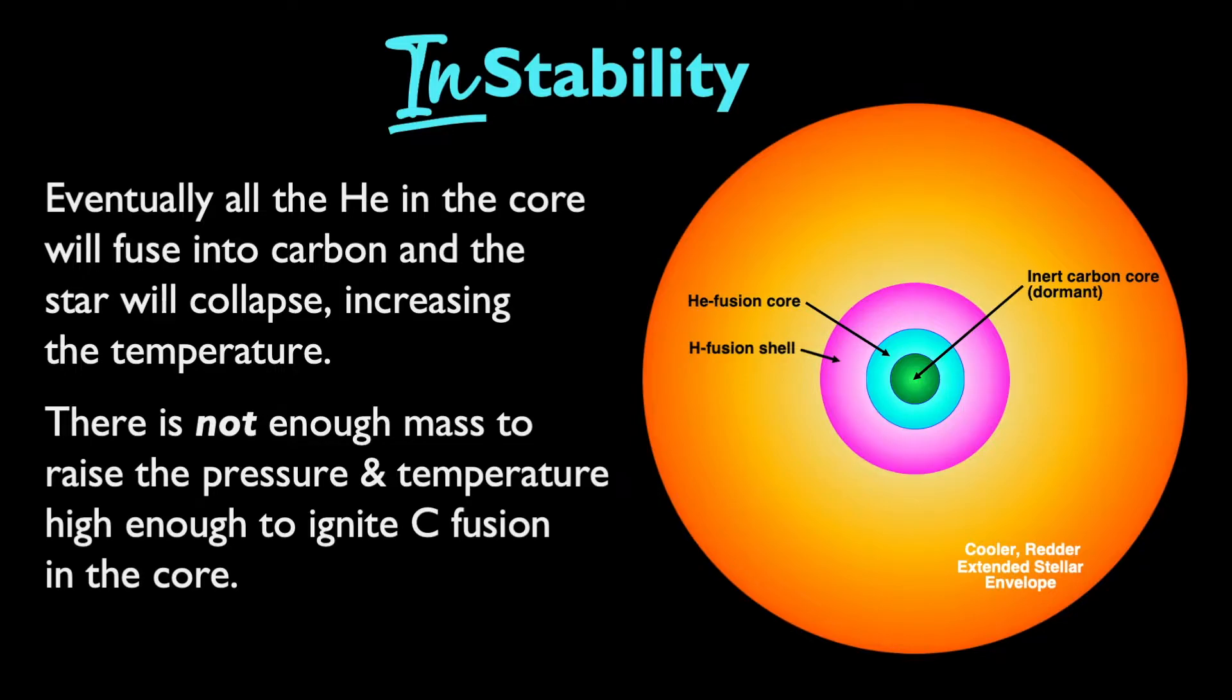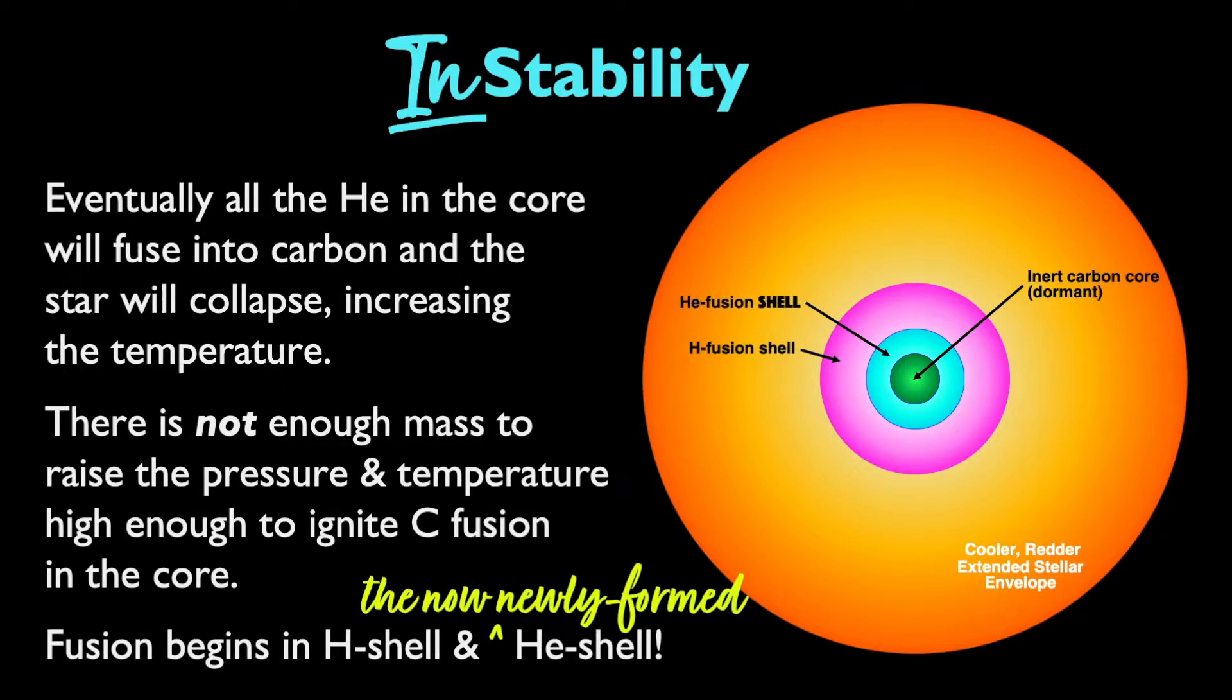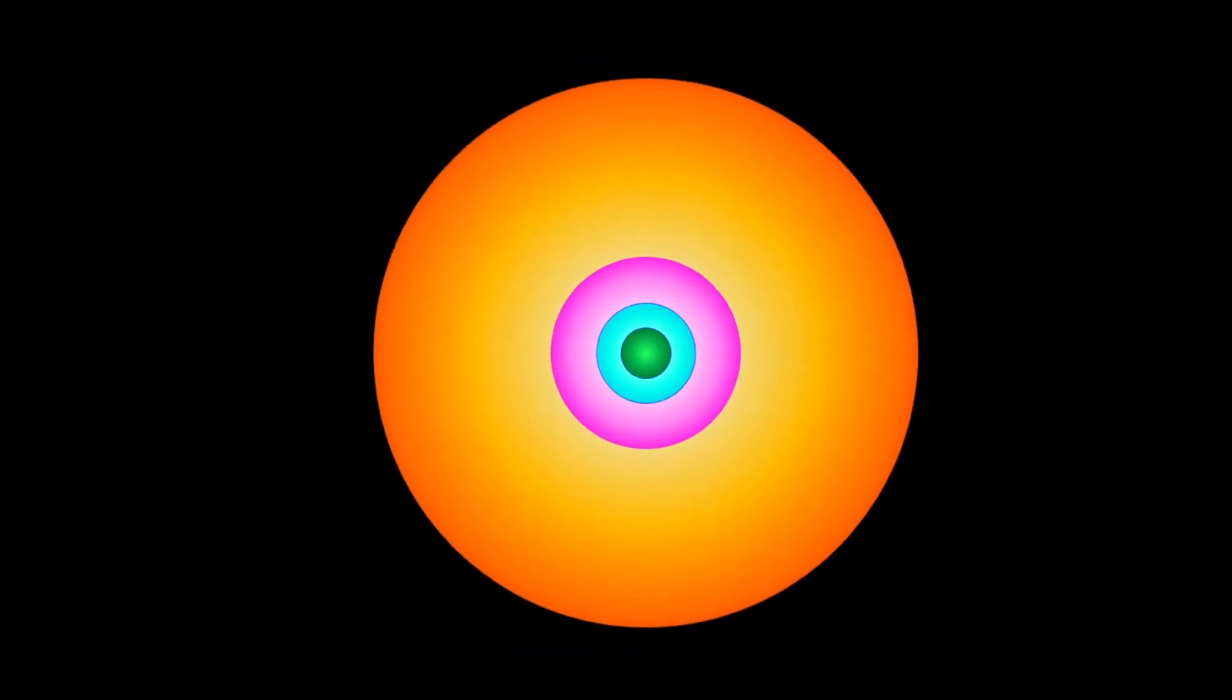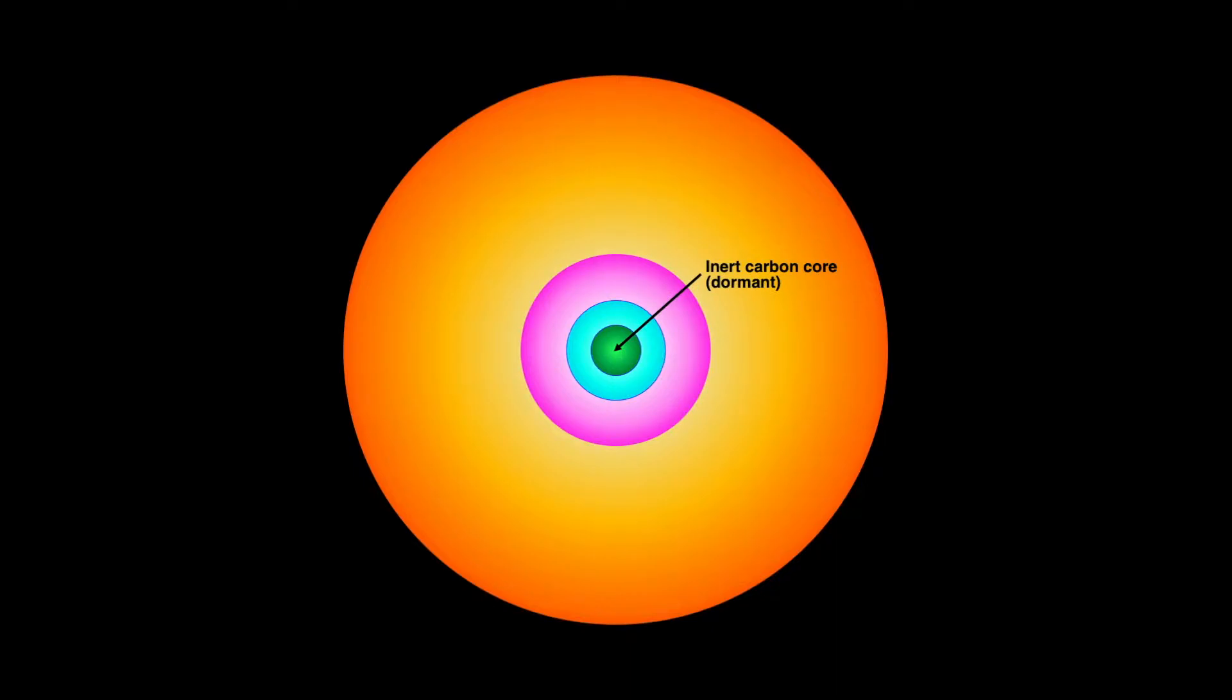However, temperatures do rise enough for fusion to begin in the newly formed helium shell surrounding that carbon core. So, to reiterate, we have an inert carbon core that's dormant and experiences no fusion, surrounded by a shell of helium fusion, which is in turn surrounded by a shell of hydrogen fusion. The rest of the star's unused hydrogen remains in the extended stellar envelope.